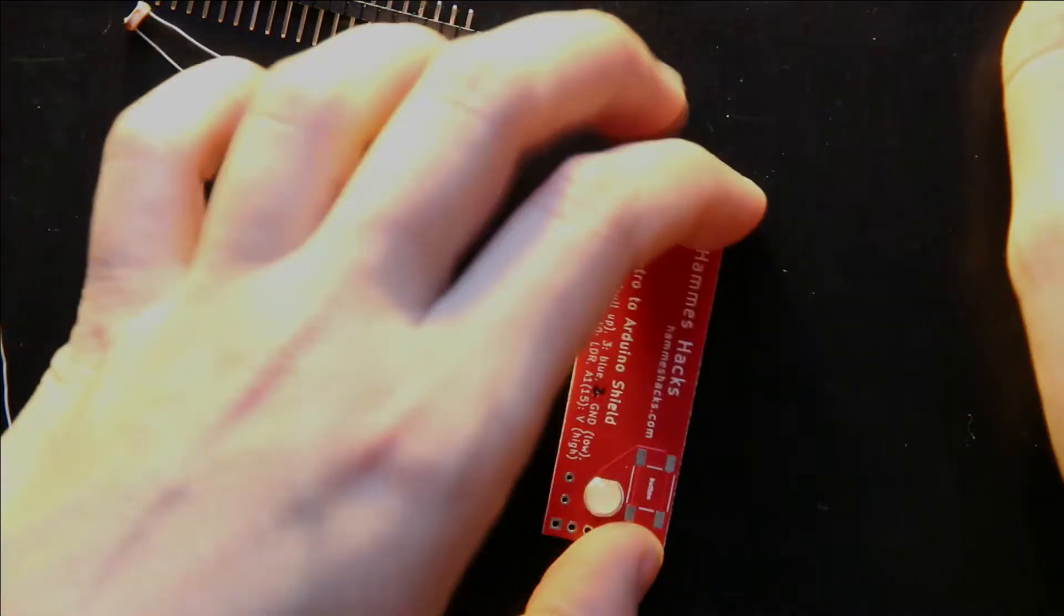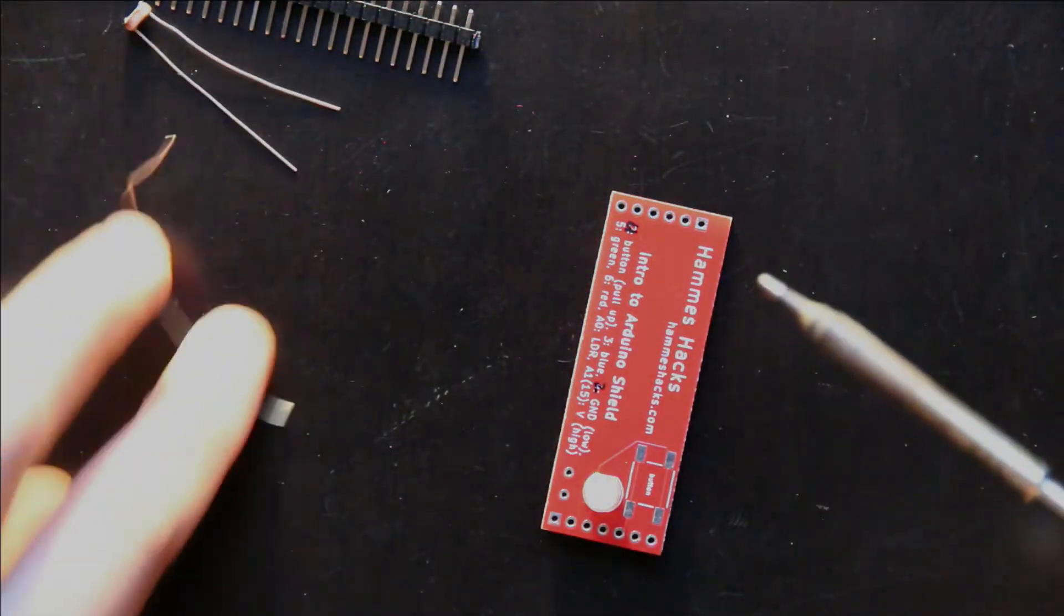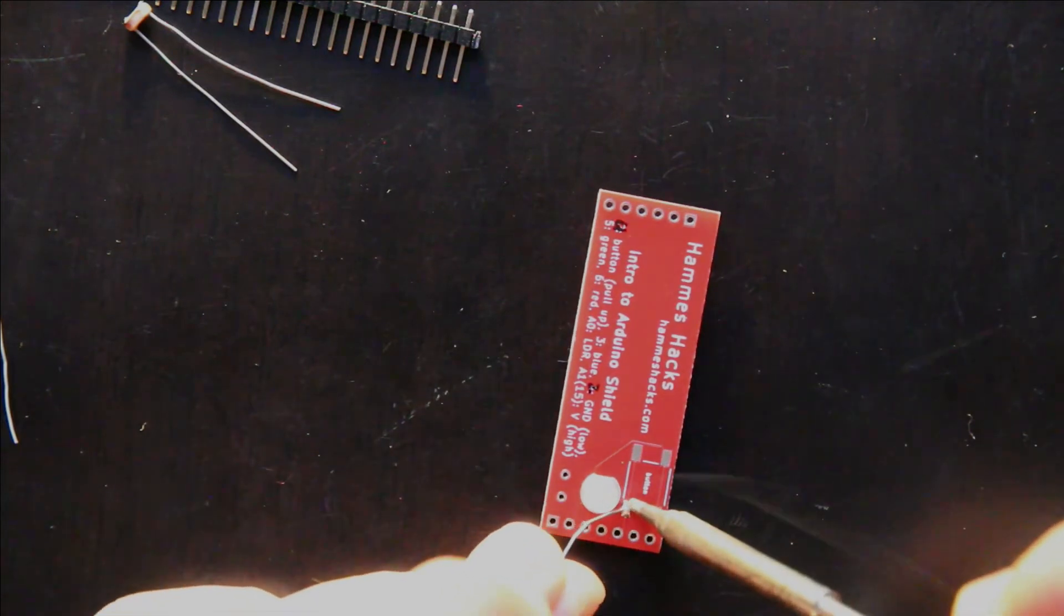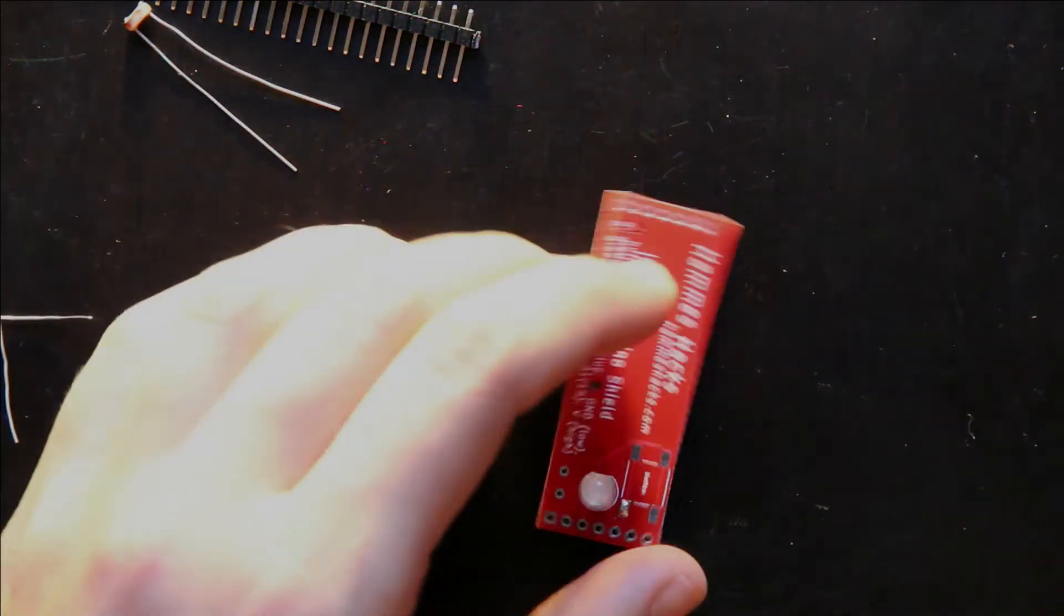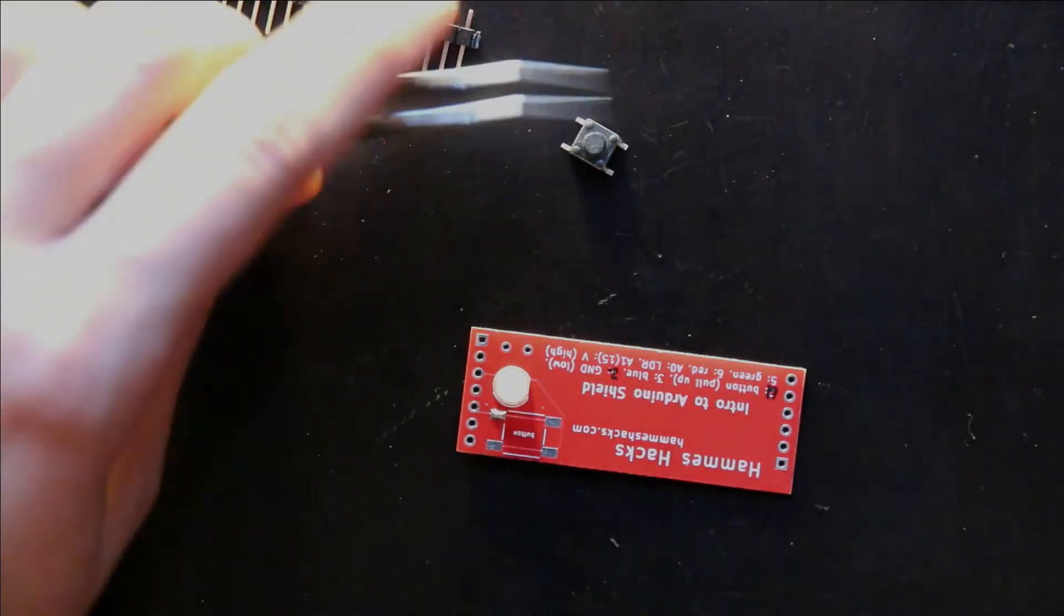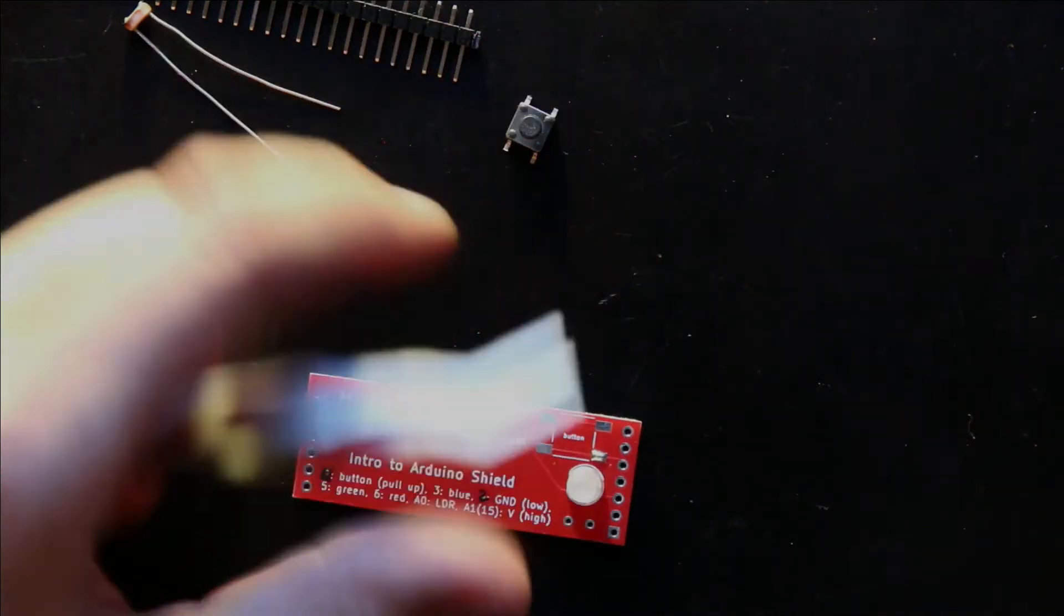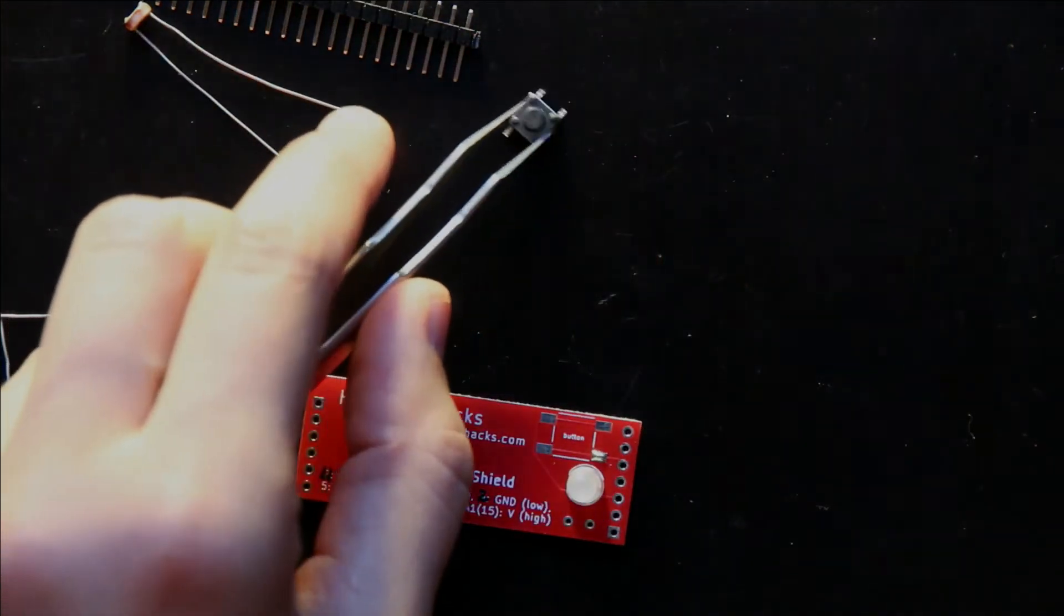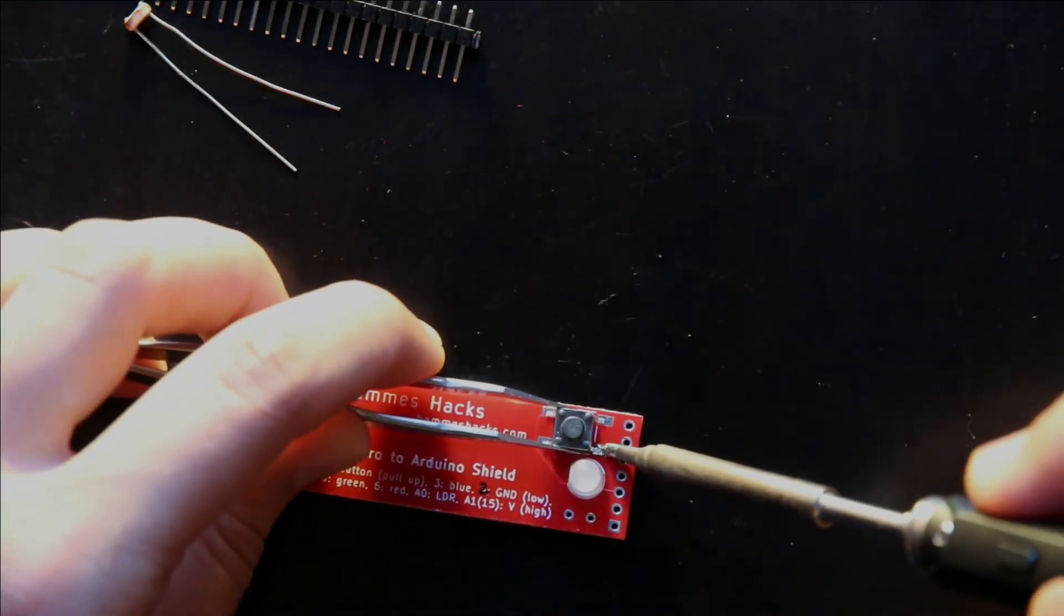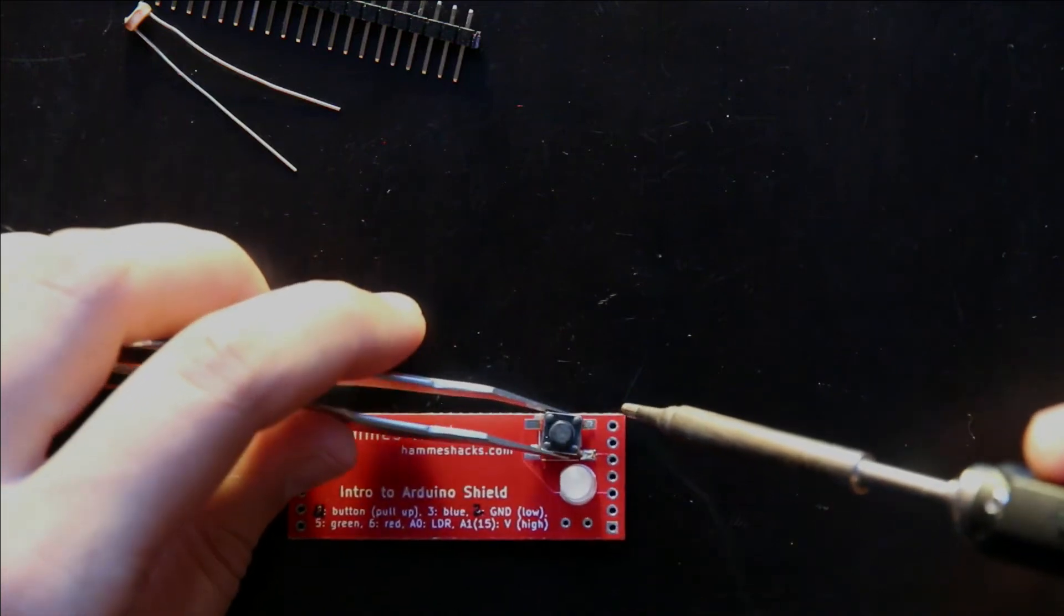The next thing to do is the button. And just like with the surface mount resistors, we add a little bit of solder to the pad, any of the pads. And there's no orientation with this button either. So we don't have to worry about accidentally messing things up.